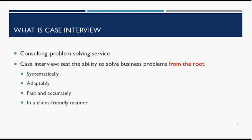All four points are very important. If you only have the first three — systematic, adaptable, fast and accurate — a computer can do that. A computer can probably do it faster and more accurately than you, and it's getting better at adaptability. But it cannot do that in a client-friendly manner. When a machine says 'hey Zipin,' it feels different from when you say it. A client will feel that difference. It has to be done by a human. That's why I want to emphasize all four points.